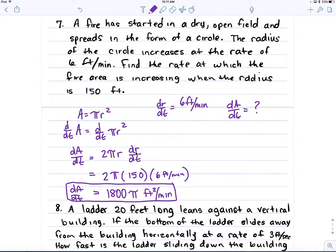And at that point, we can plug in given information. They tell us our radius is 150, and our dr/dt was given six feet per minute. And so our dA/dt is going to be 1800π feet squared per minute. Make sure your units are appropriate for the given question.